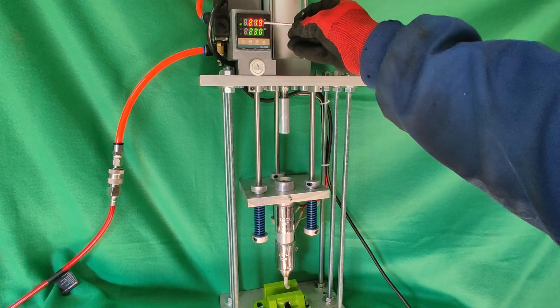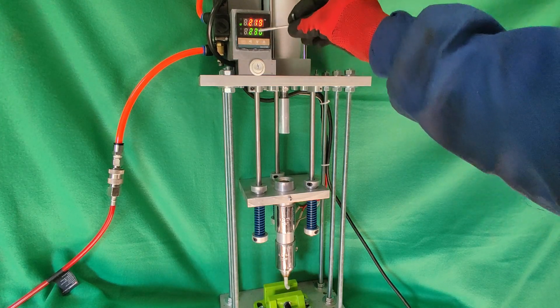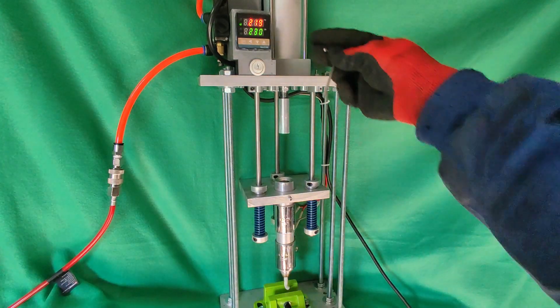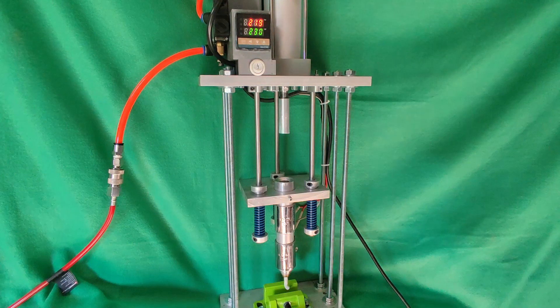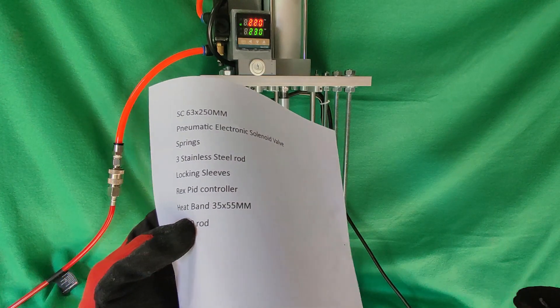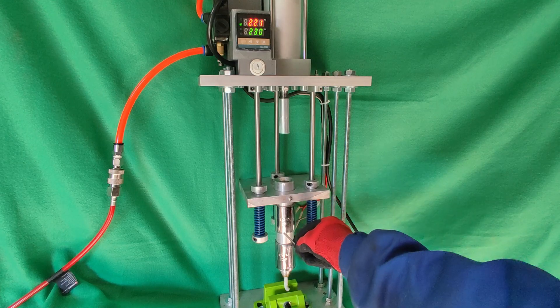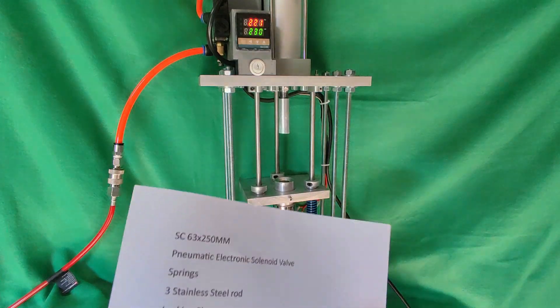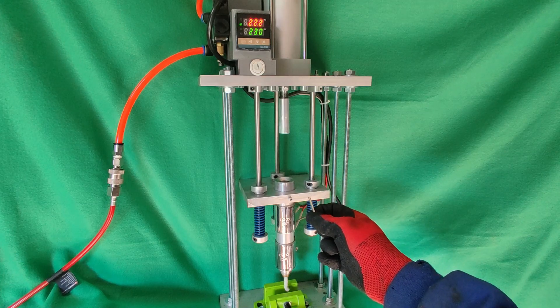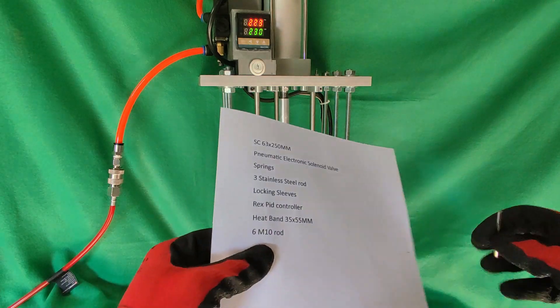The PID controller can go up to I think 350, but it's pretty much useless. Most of the time you will never pass 250 degrees Celsius. You can change to Fahrenheit if you want. You can change the height 35 by 55, 35mm wide, 55 height. It's 180 watt each.